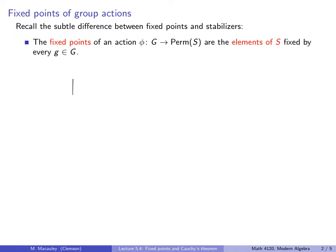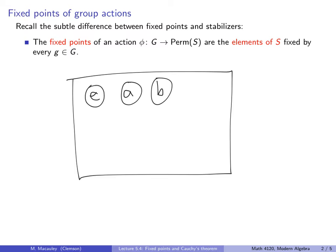If you think of a group action using my group switchboard analogy, where every element in the group has a button, and pressing that button permutes the elements in the set, then the fixed points are precisely the elements in the set that are unchanged or unmoved no matter which button you push.